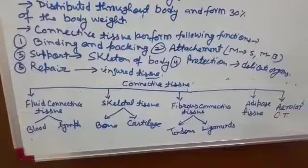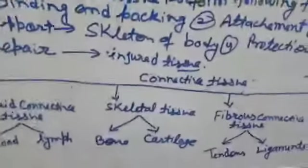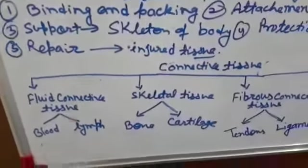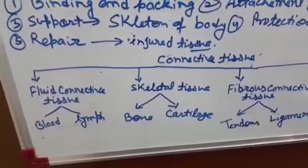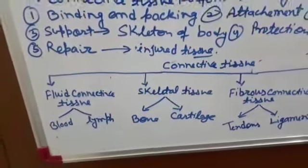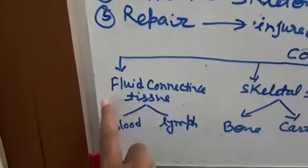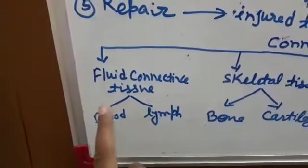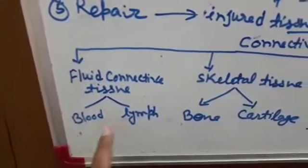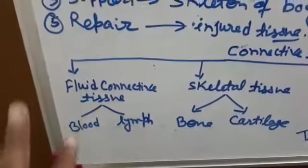Now the classification of connective tissue. The connective tissue has five types. The first one is known as fluid connective tissue or liquid connective tissue. It has two types: blood and lymph, because blood and lymph are fluid in nature.